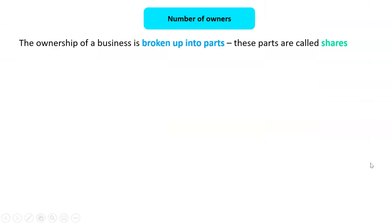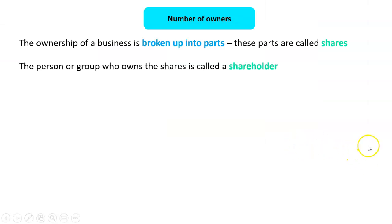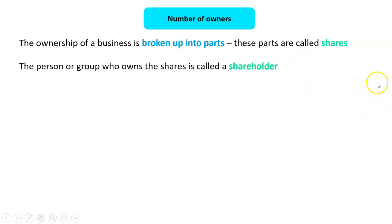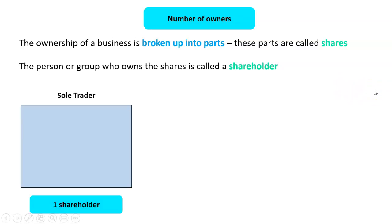First is the number of owners. A business is broken up into parts called shares, and the person or group who owns those shares is called a shareholder or owner — you can use those words interchangeably. With a sole trader, there is one owner who owns 100% of the shares.